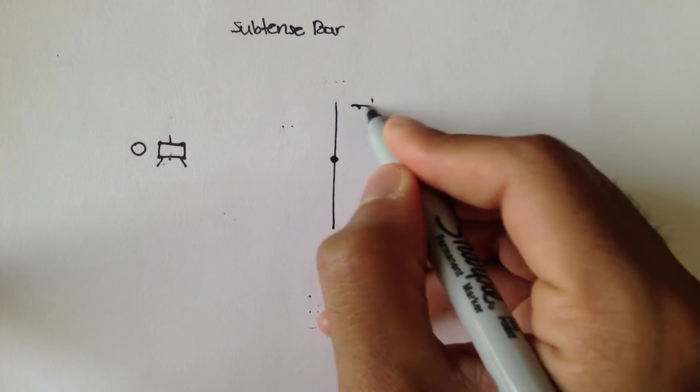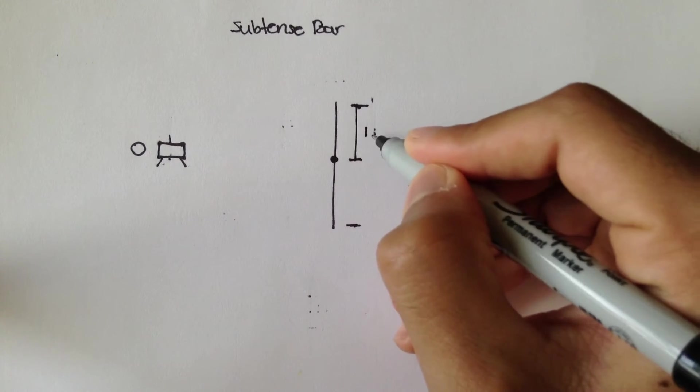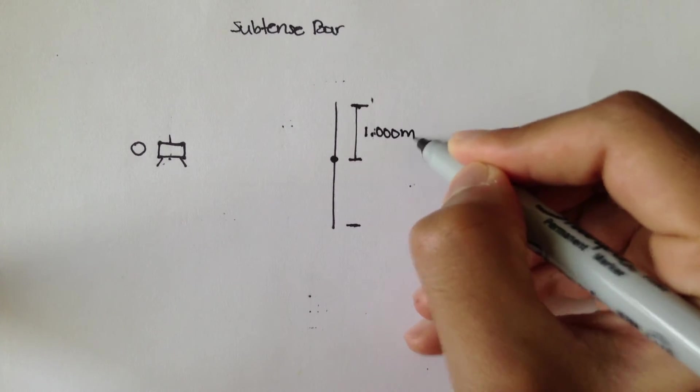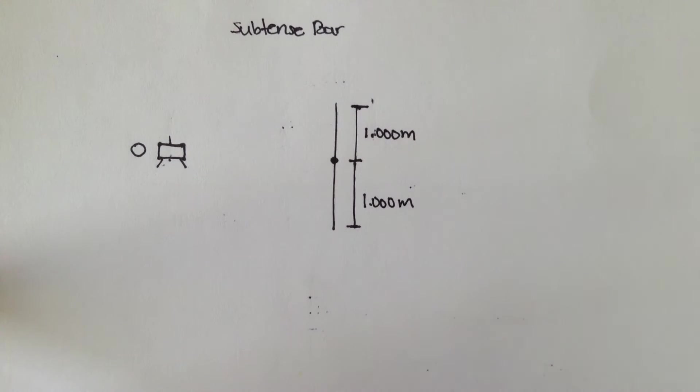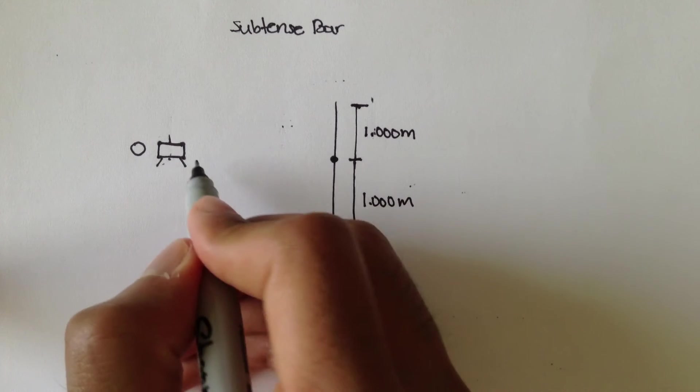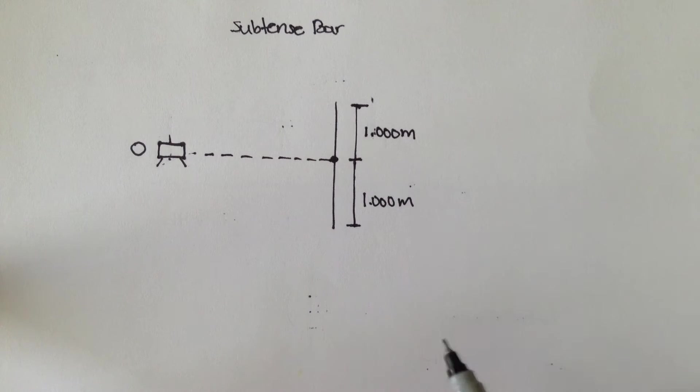Let's dimension this. It's 1.000 meters, and then 1.000 meters. So this is a 2 meter subtense bar. And this instrument is sighting to this point.